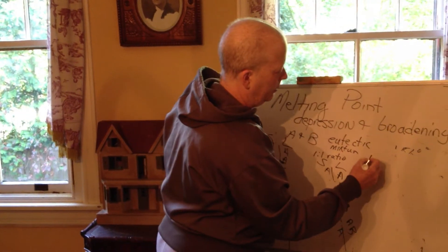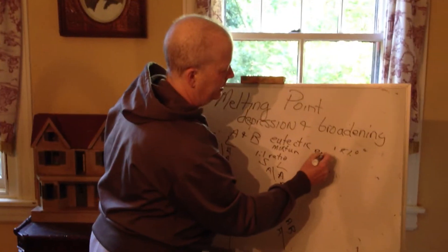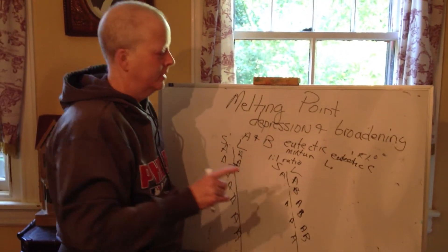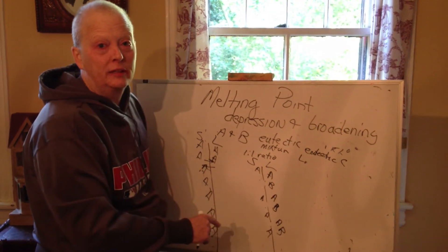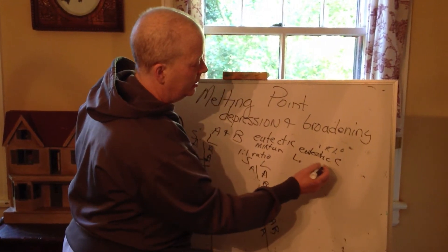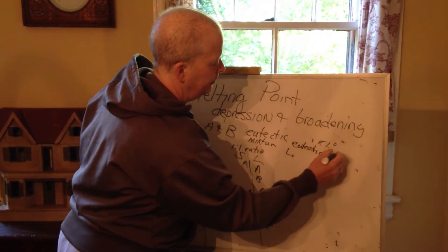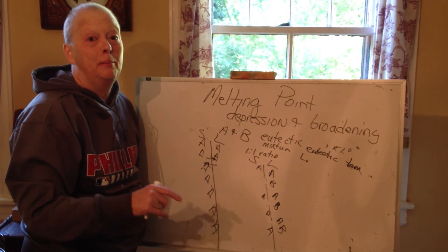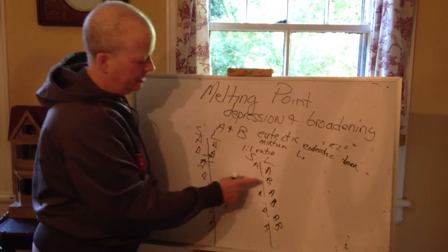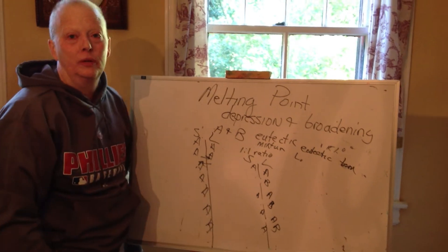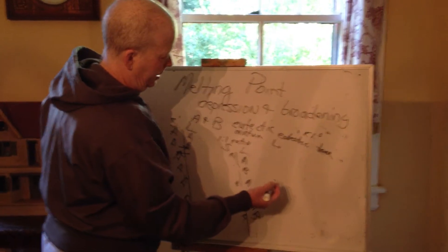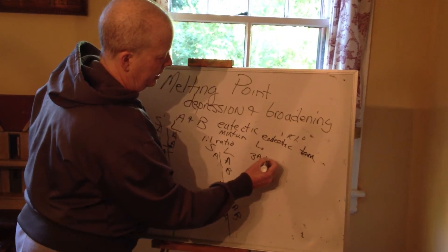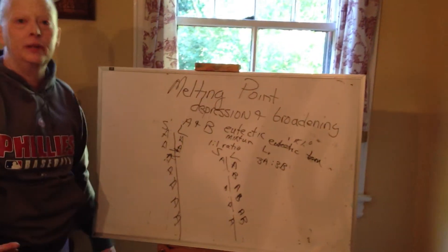So let's look at the ratio. In the liquid at the eutectic temperature — and this applies to all contaminated solutions — what I have are three A's to three B's. That's the eutectic mixture. All contaminated solutions initially form the eutectic mixture, which I think is fascinating — not just the perfect eutectic mixture. So at the eutectic temperature, the eutectic composition forms. In my little molecular example, I have three A's to three B's in the liquid.